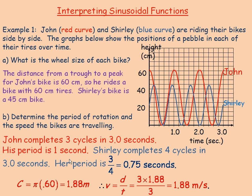We could have just as easily used Shirley's bicycle, the difference would be we'd have 0.45 meters here, so we'd have a shorter distance. And the distance she traveled would be 4 times that shorter distance in the 3 seconds, but it would still work out to 1.88 meters per second.